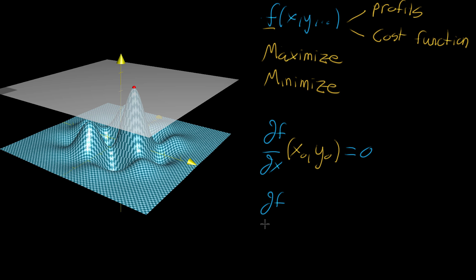And then similarly, the partial derivative with respect to the other variable, with respect to y, at that same point has to be zero.